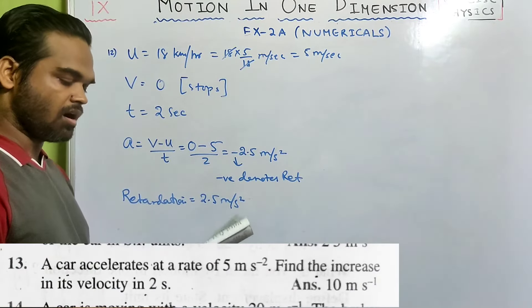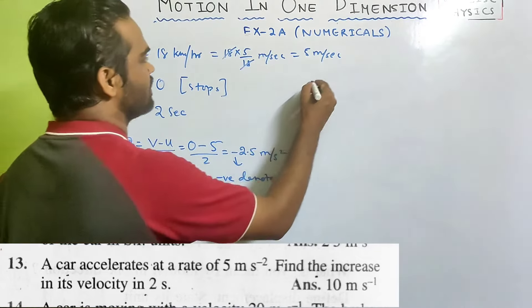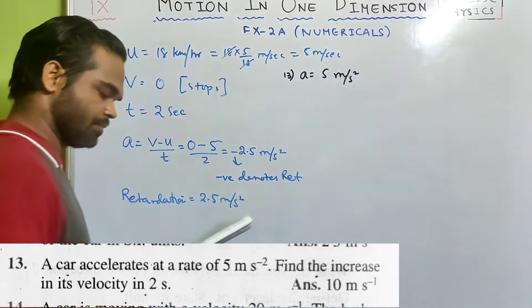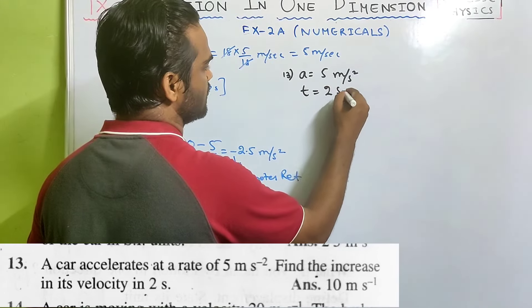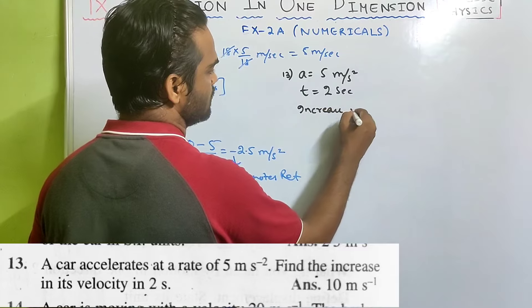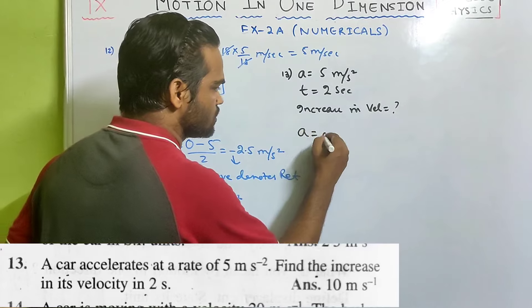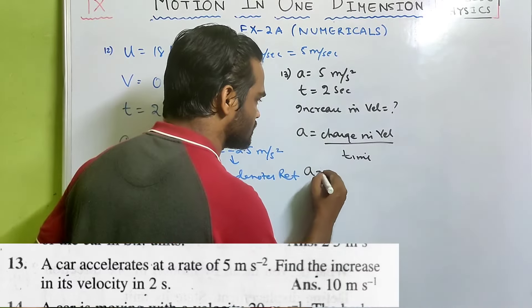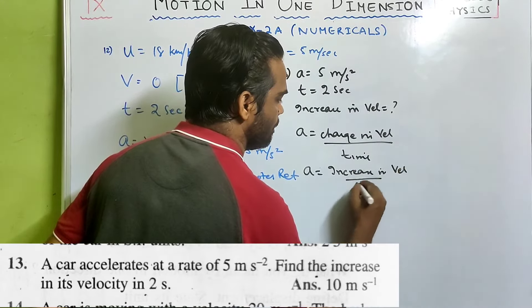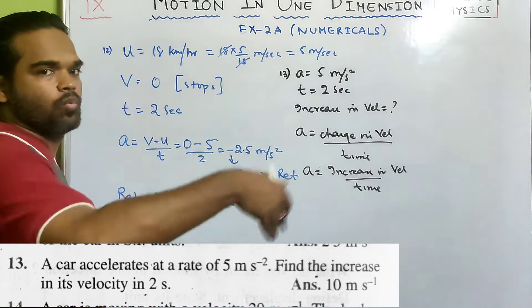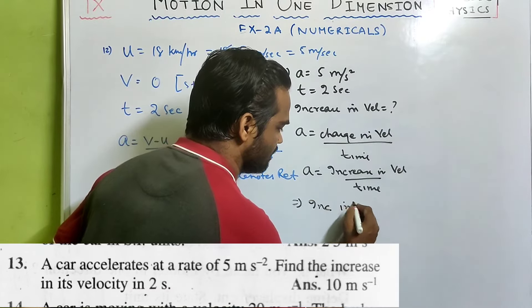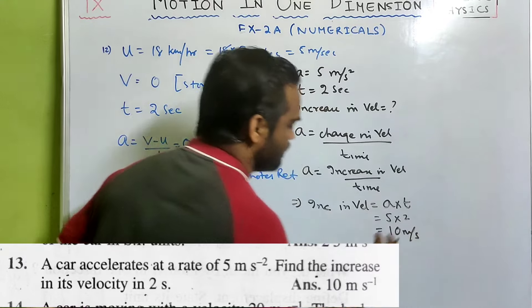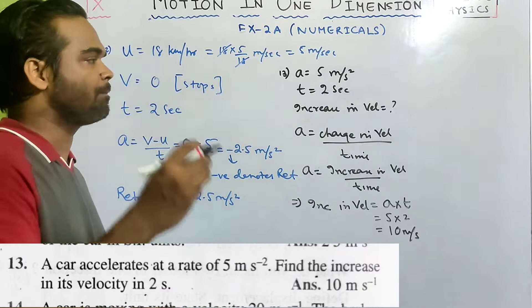Sum 13: a car accelerates at 5 m/s². Find the increase in velocity in 2 seconds. Acceleration = increase in velocity / time, so increase in velocity = acceleration × time = 5 × 2 = 10 meter per second.